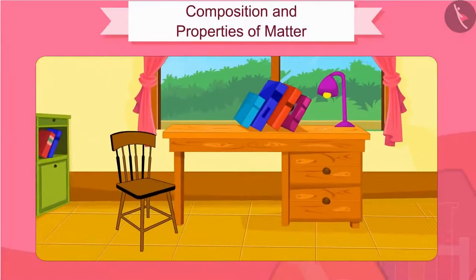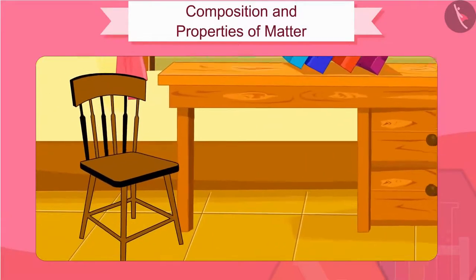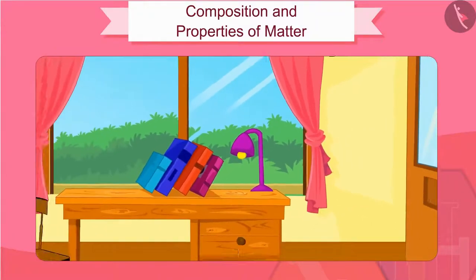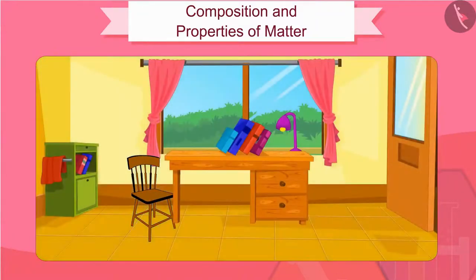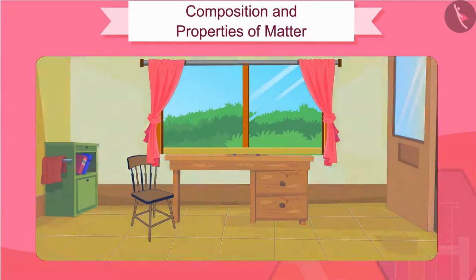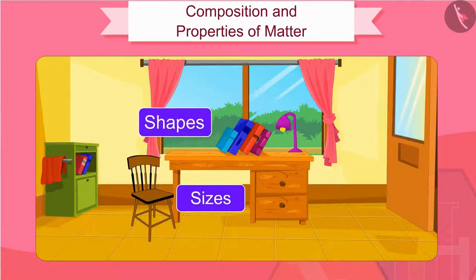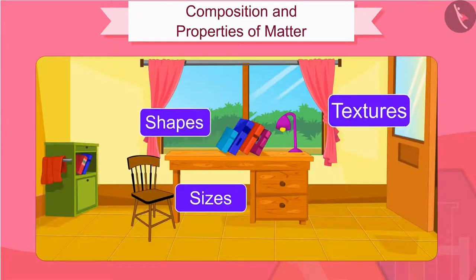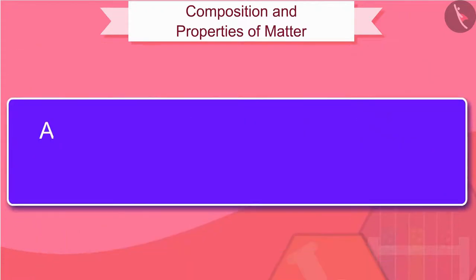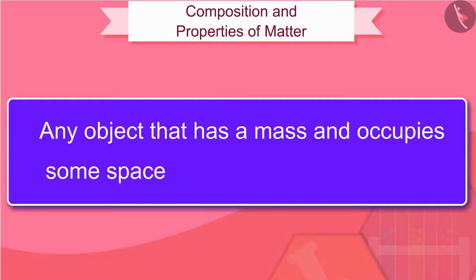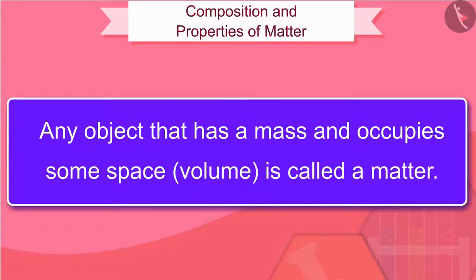As we look at our surroundings, what do you see? We see a large variety of things around us which have different shapes, sizes and textures. Any object that has a mass and occupies some space or volume is called matter.